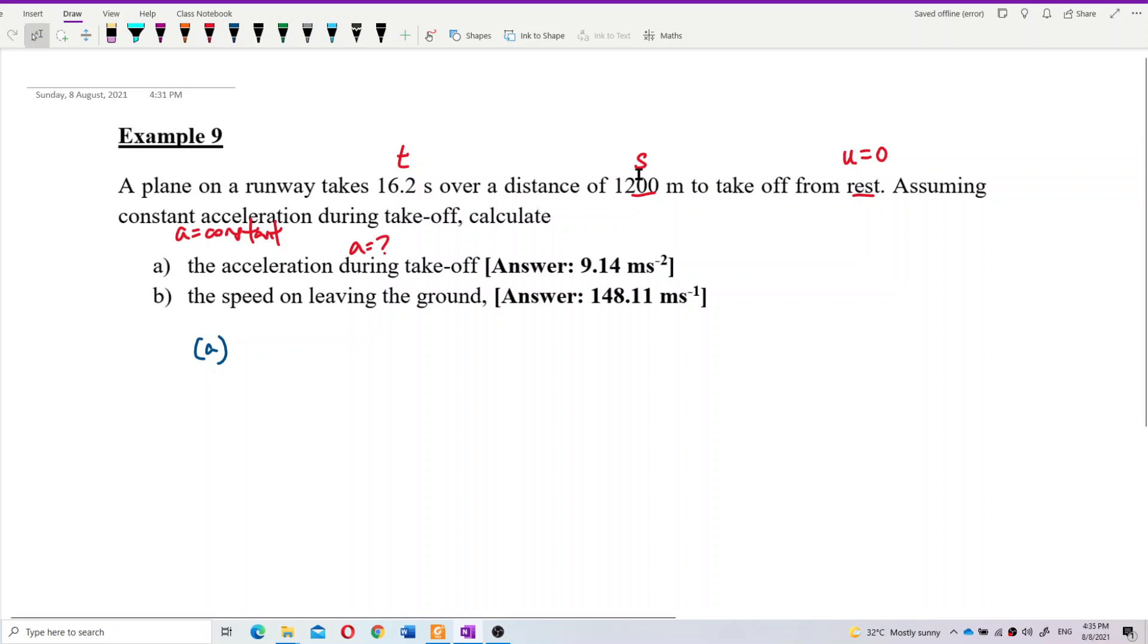So we have S, U, A, T. What equation has this SUAT? We can use the formula SUTAT, which is S equal to U T plus half A T square.